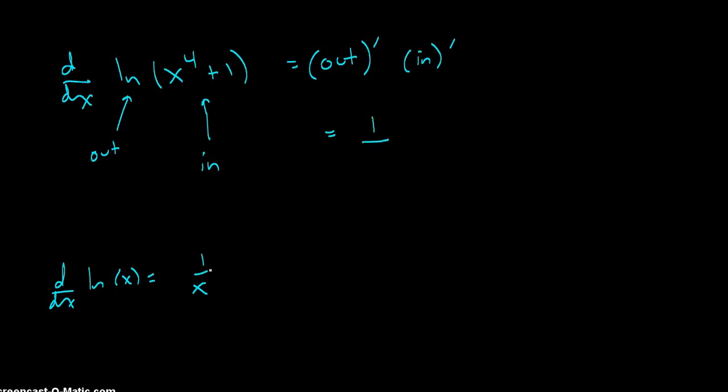and instead of writing x, we leave the inside in, which means that instead of x, we're going to write x to the fourth plus one. So it's one over x to the fourth plus one times the derivative of the inside.